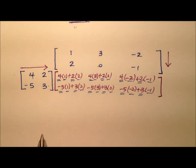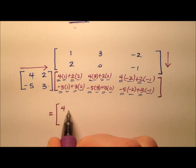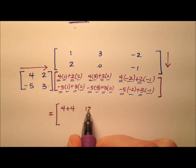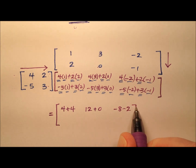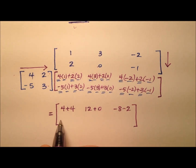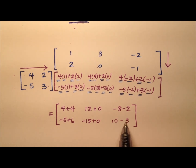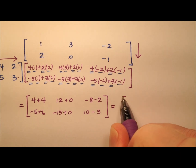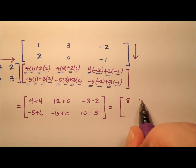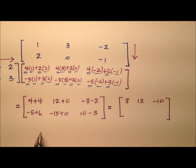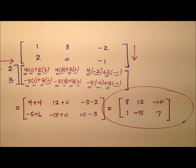Finishing the calculations: four times one is four, plus two times two is four, giving eight. Four times three is twelve, plus zero, giving twelve. Negative eight minus two gives negative ten. Down in row two: negative five plus six is one. Negative fifteen plus zero is negative fifteen. And positive ten minus three is seven. So the product matrix — a two by three — has entries eight, twelve, negative ten in the first row, and one, negative fifteen, seven in the second row.